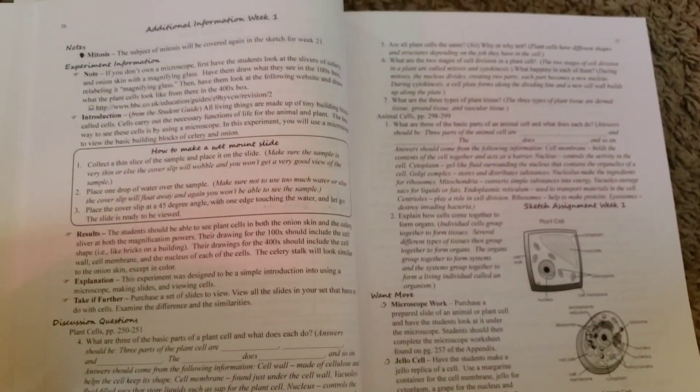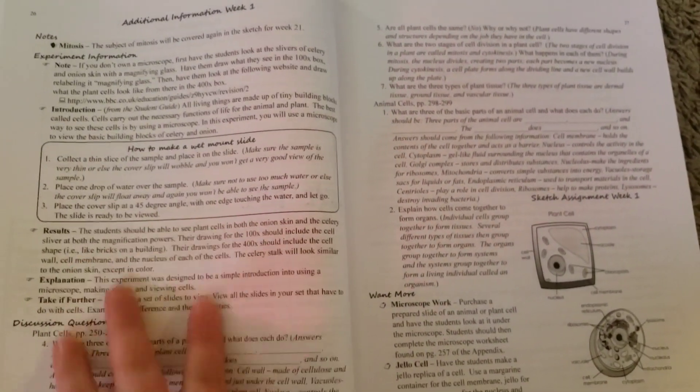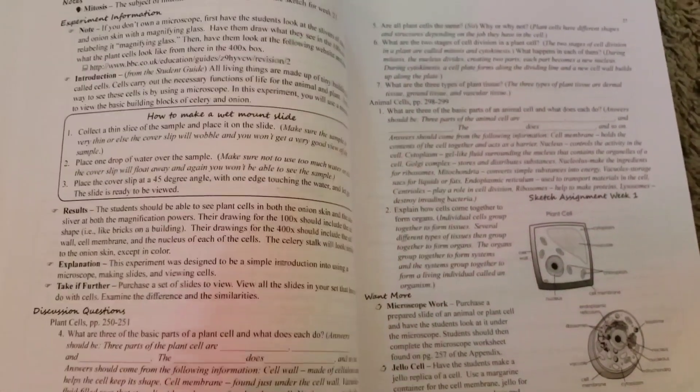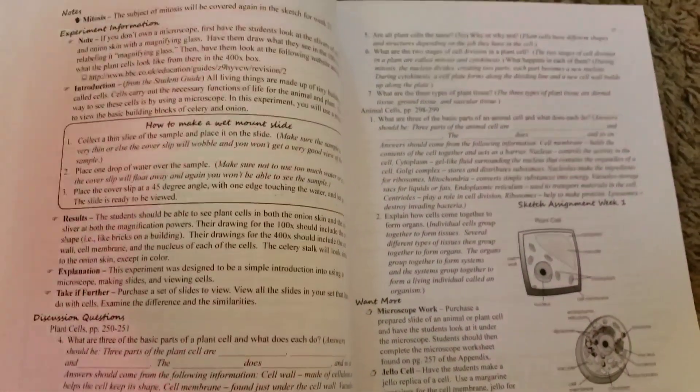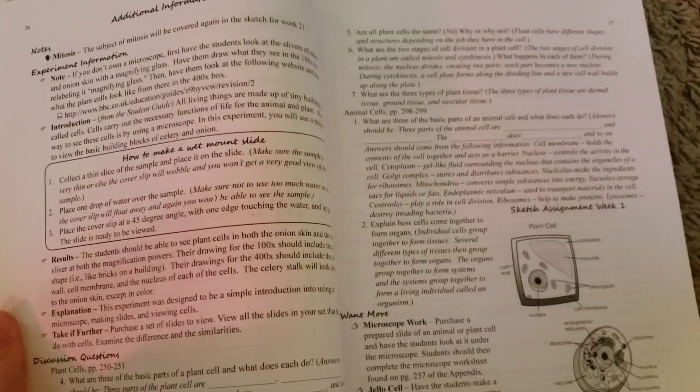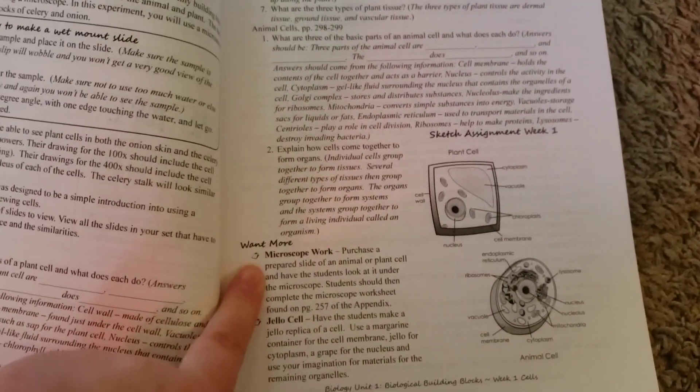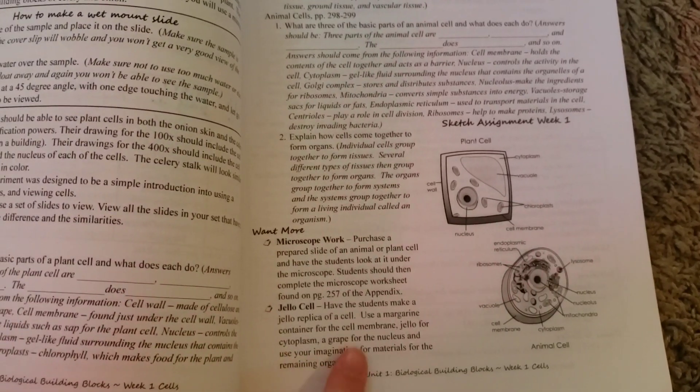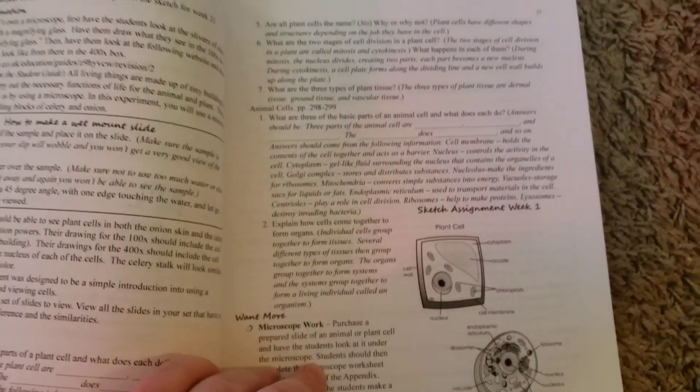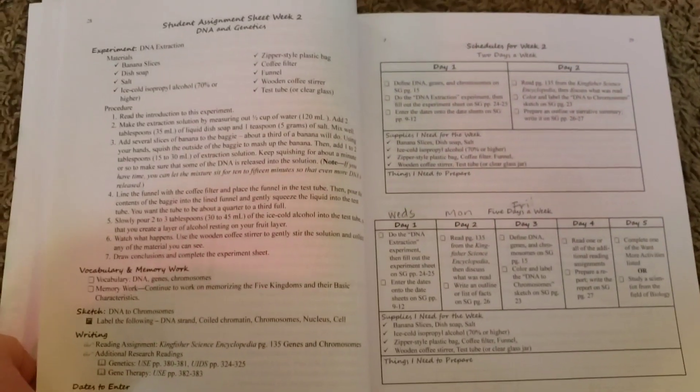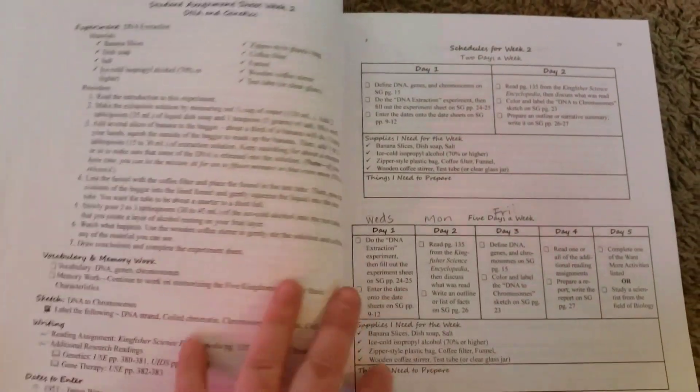Very helpful. And then there's also additional information. There's additional books you can read. There's additional discussion questions. There's multiple other experiments that you can do. There's microscope work for this. There's the option to make a jello cell. I think it's just really awesome.